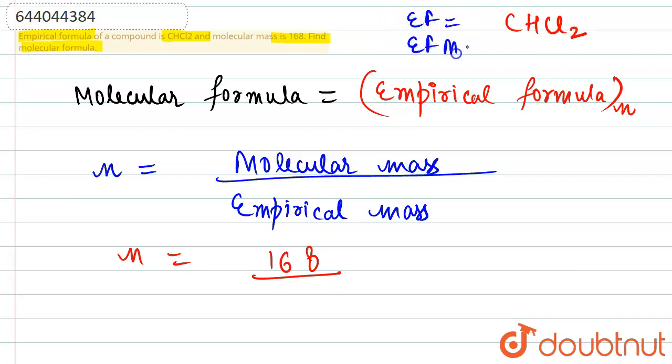And empirical formula mass will be equal to one carbon has a mass of 12, one hydrogen one, one chlorine has a mass of 35.5. So from here the value comes out to be 83.